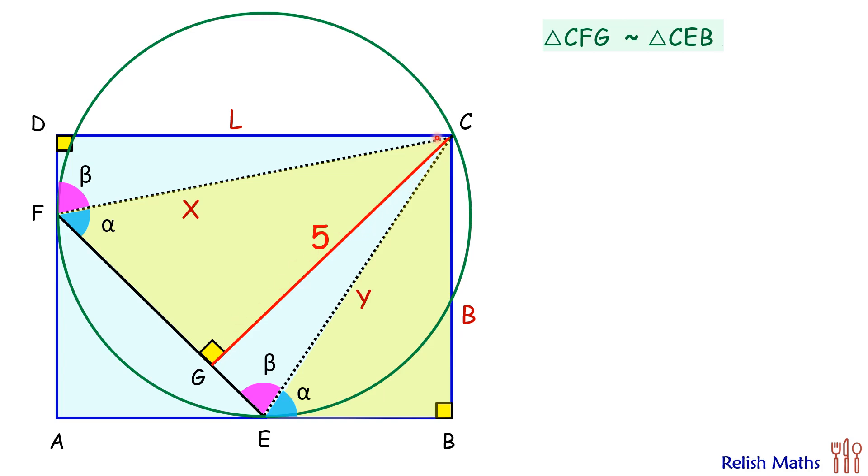So we can say that CF upon CG will be CE upon CB. Putting the values here, CF is your X and CG is 5, CE is Y and CB is B. So we'll get this relation here. Doing the cross multiplication we'll get X upon Y is 5 upon B.